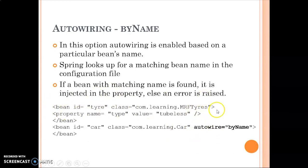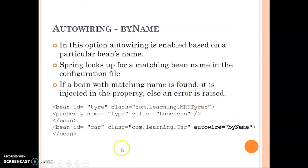So if the bean id in the configuration file is 'tire' and the property in the Car class is also named 'tire', Spring finds that match and injects the dependency. However, if the property name in the class were 'tire1' but the bean id was 'tire', auto-wire by name would fail and raise an error because no matching bean id is found.